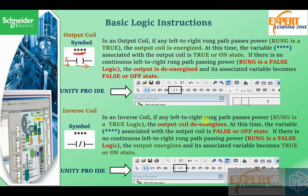The inverse coil is just the inverse of the normal coil. In an inverse coil, if any left-to-right rung passes power, the output coil is de-energized and the variable associated with it is false. If there is no continuous left-to-right rung path passing power, the output energizes and the variable associated to it becomes true — so when we have a logic zero on the input side of the coil, the associated variable becomes logic one.